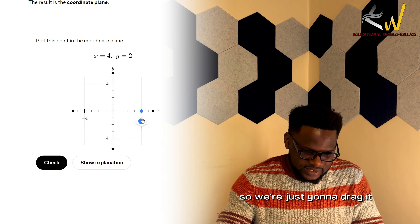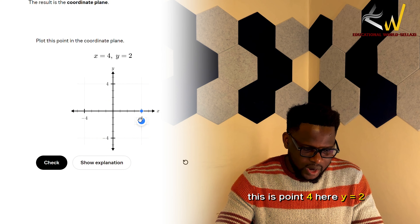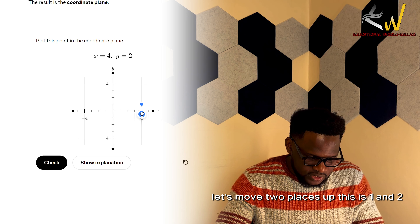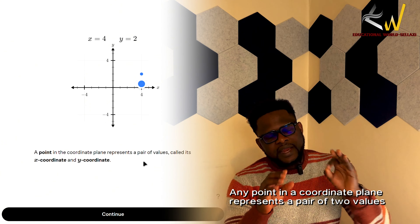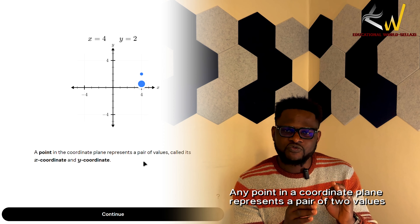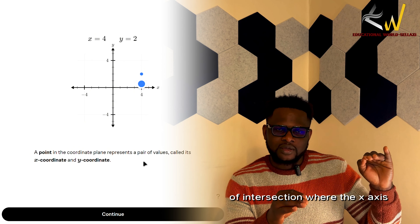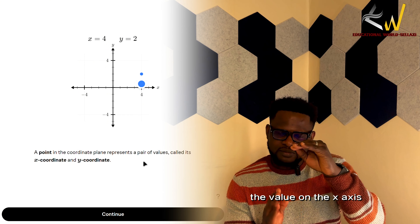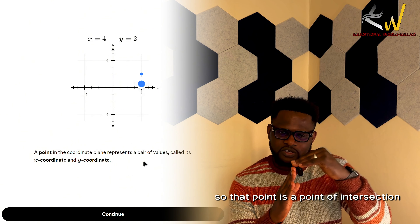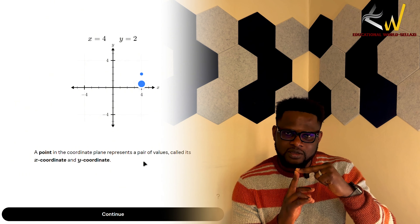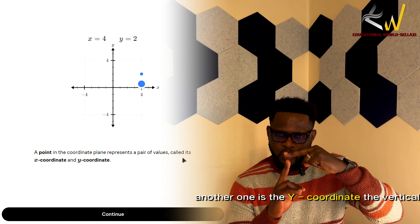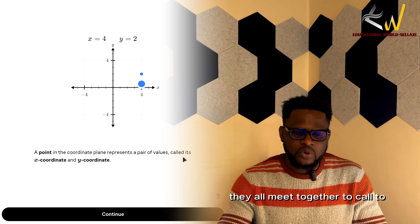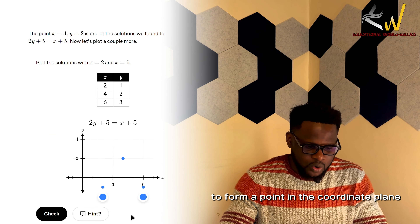When x is 4 and y is 2, we move two places up from 4. This point is where x is 4 and y is 2. Any point in a coordinate plane represents a pair of two values — a point of intersection where a value on the x-axis meets a value on the y-axis. That is why a point on a coordinate plane has two coordinates: the x-coordinate (horizontal) and the y-coordinate (vertical), which meet together to form a point.